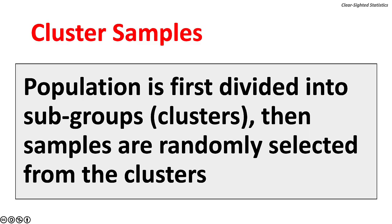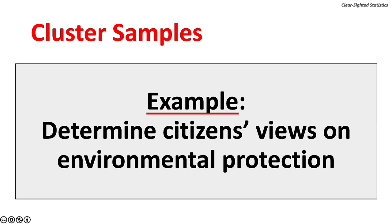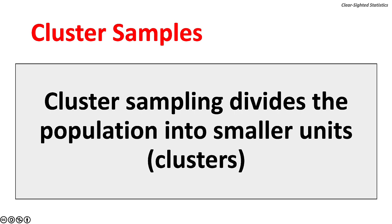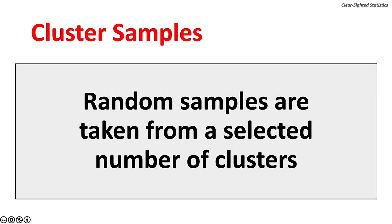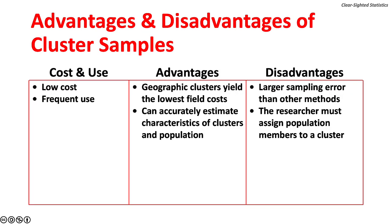With cluster samples, the population is first divided into subgroups called clusters, and then samples are randomly selected from the clusters. For example, determining citizens' views on environmental protection. Cost is low with frequent use. Advantages include geographic clusters yielding the lowest field costs and the ability to accurately estimate characteristics of clusters and populations. Disadvantages include larger sampling error than other methods and the requirement that the researcher assign members of the population to each cluster.